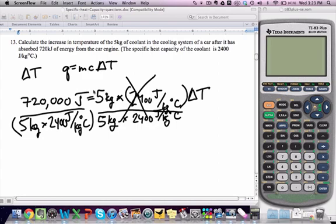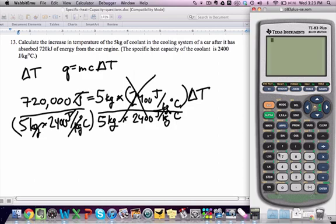Over here all of that cancels out. We look at the units first: kilograms over kilograms cross out, and the joules up here cancel joules down here. All we're left with is degrees Celsius in the numerator. We come over to the calculator and punch in 720,000 divided by—making sure we use parentheses for order of operations—5 times 2,400. That gives us 60 degrees Celsius as our temperature change.